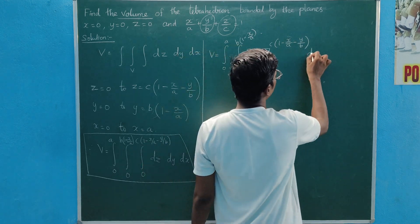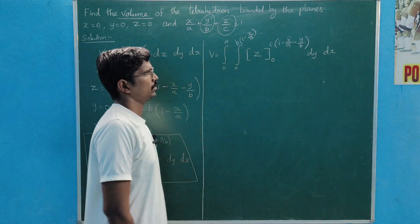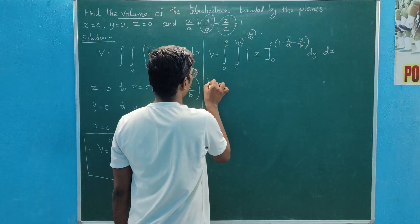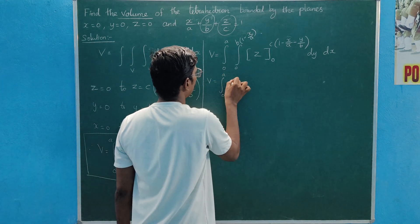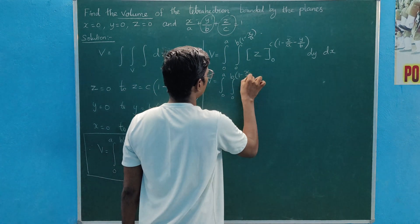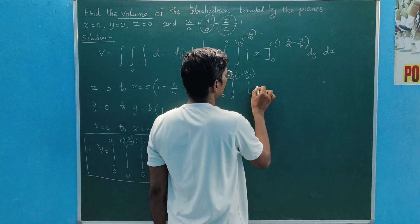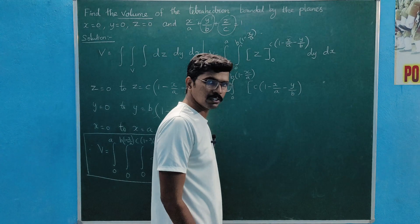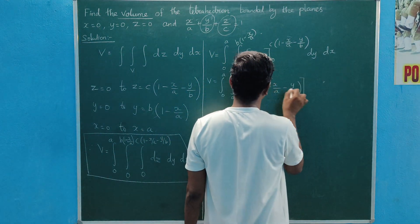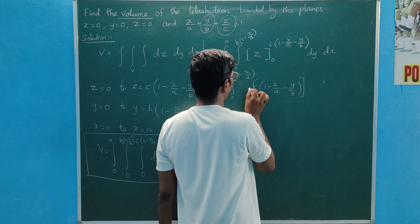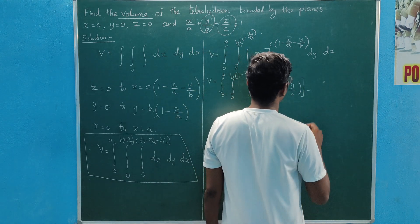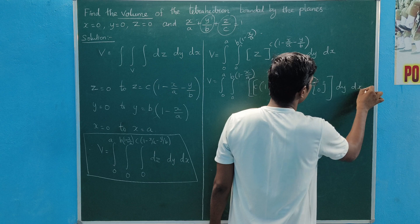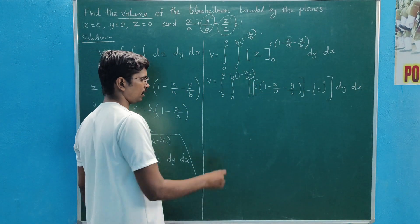Now this becomes dy dx. Upper limit minus lower limit: V equals 0 to a, 0 to b of 1 minus x divided by a. Applying the upper limit: c times 1 minus x/a minus y/b, and lower limit is 0. This gives c times y times 1 minus x/a minus y squared over 2b.